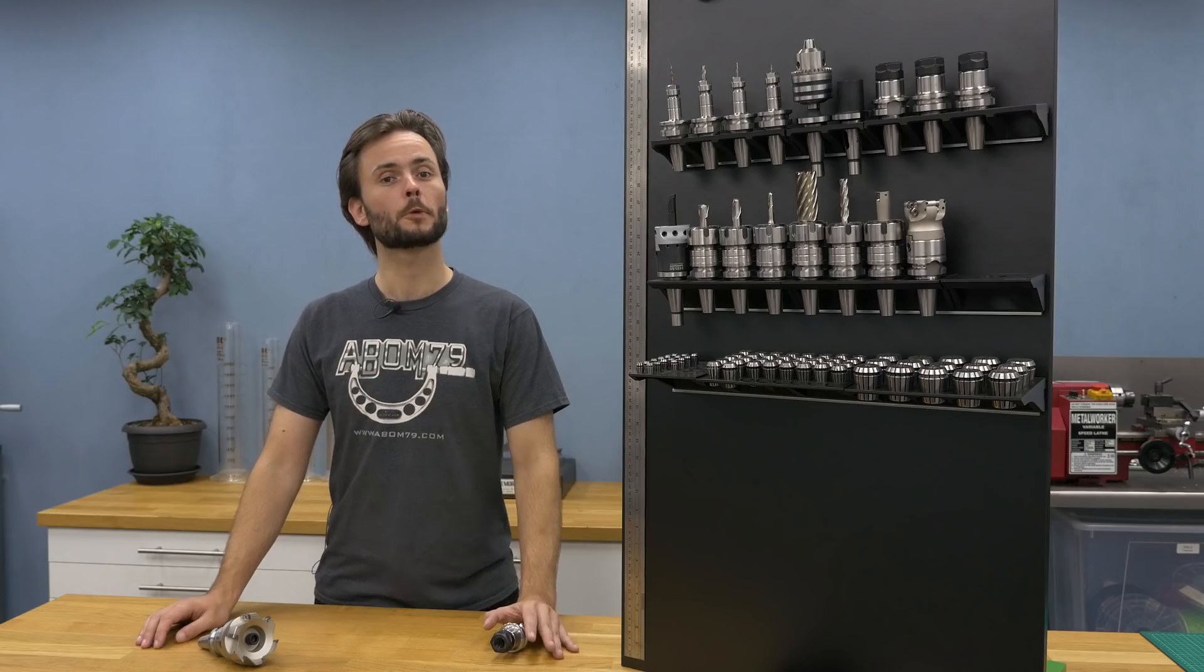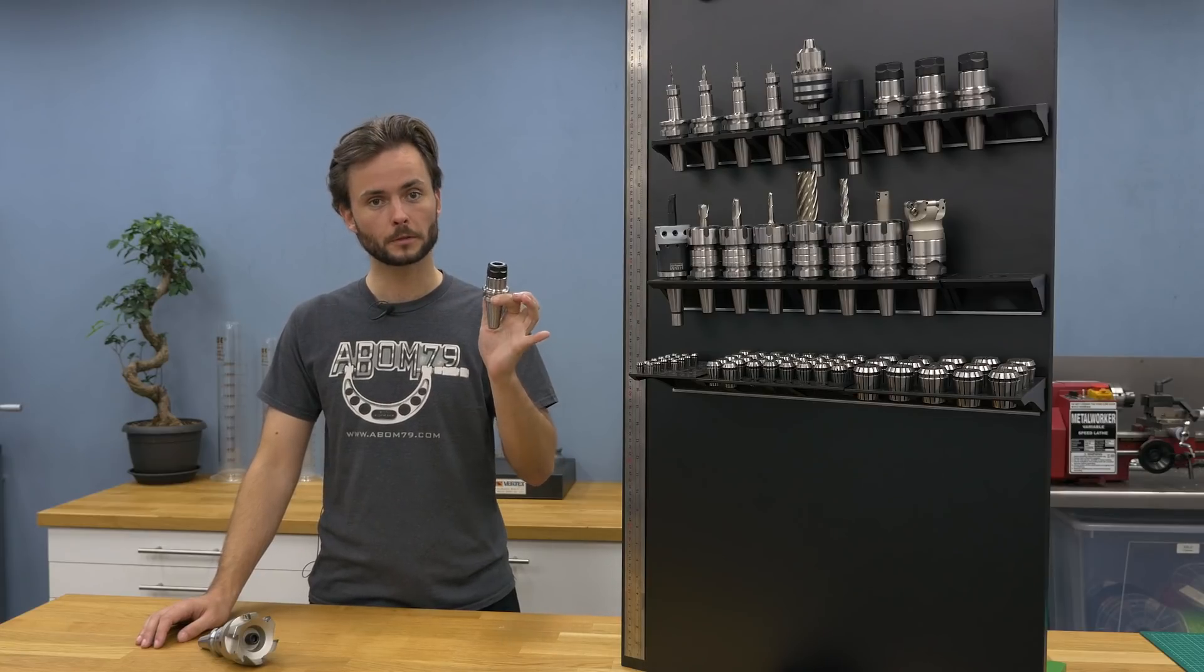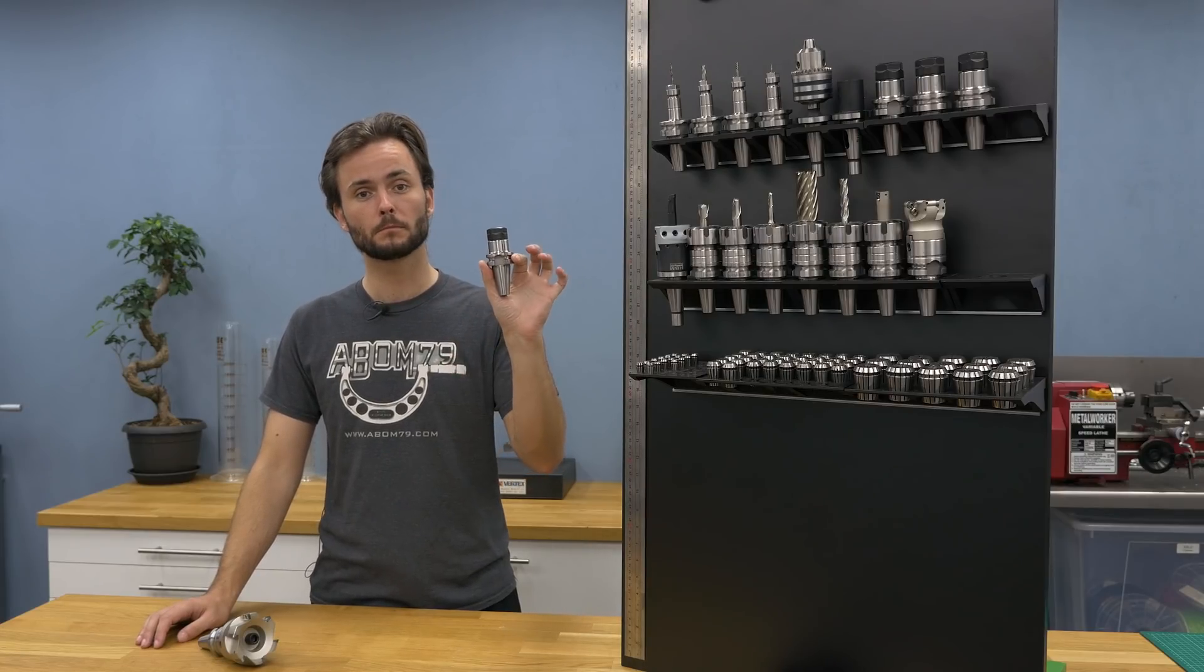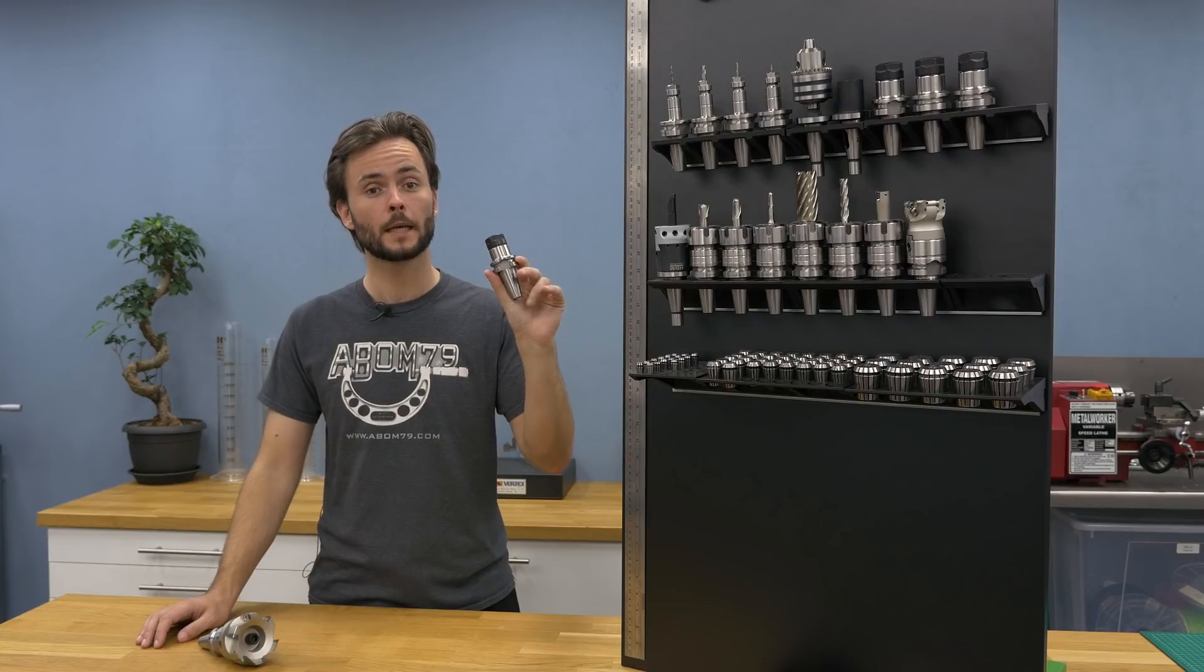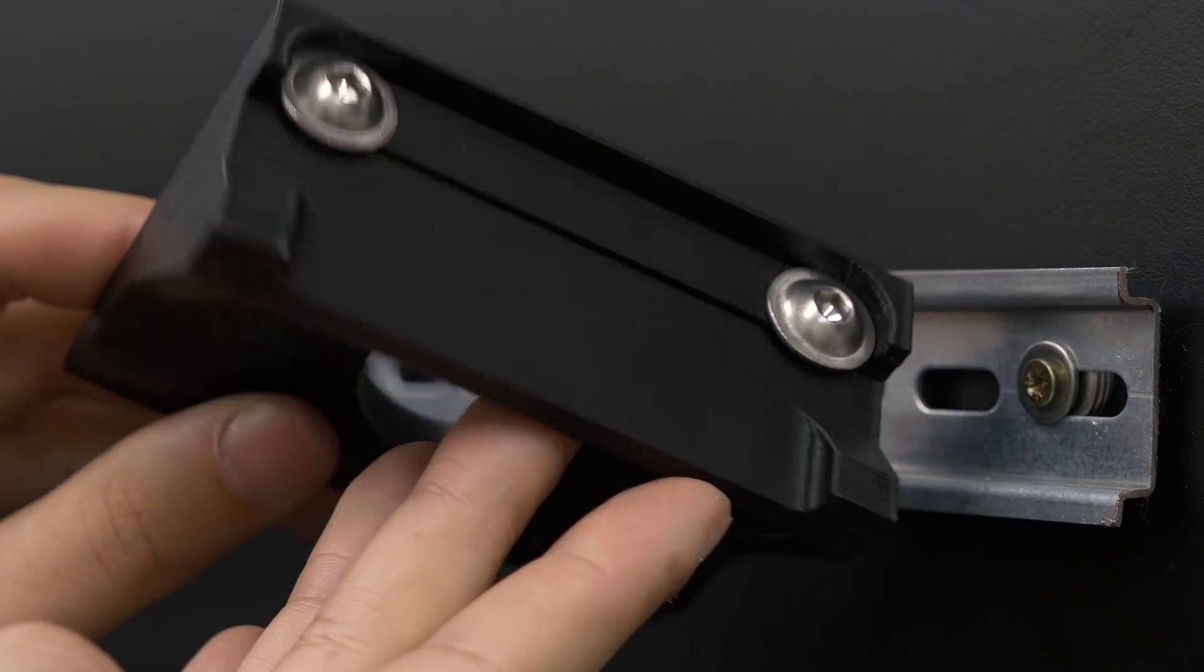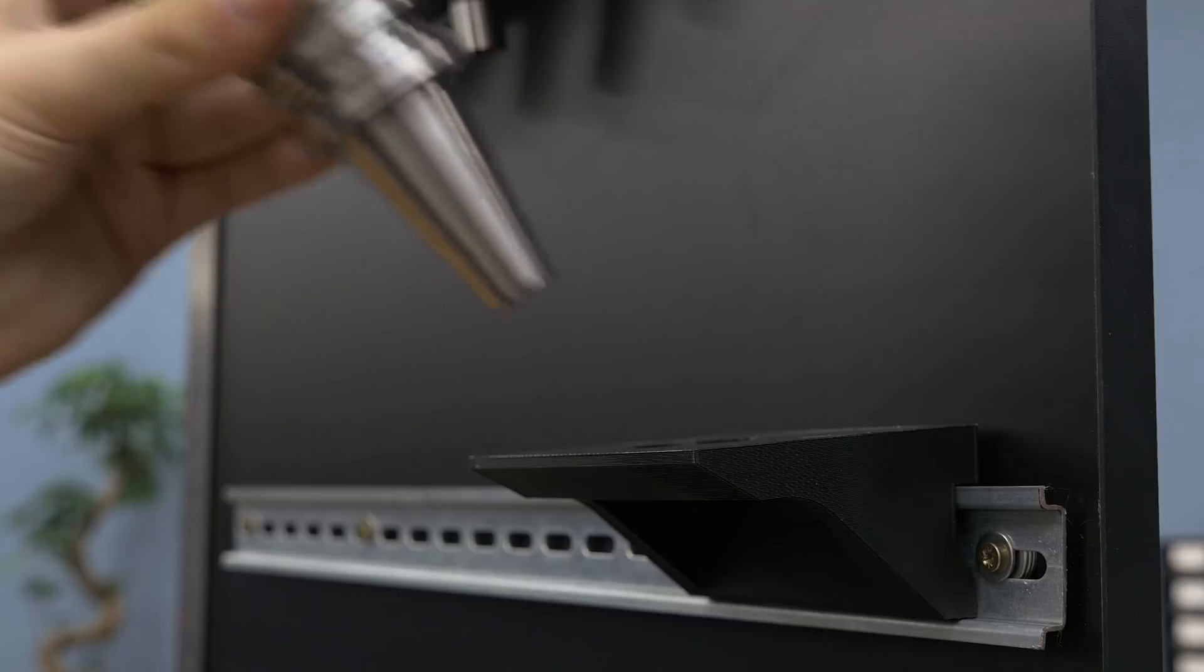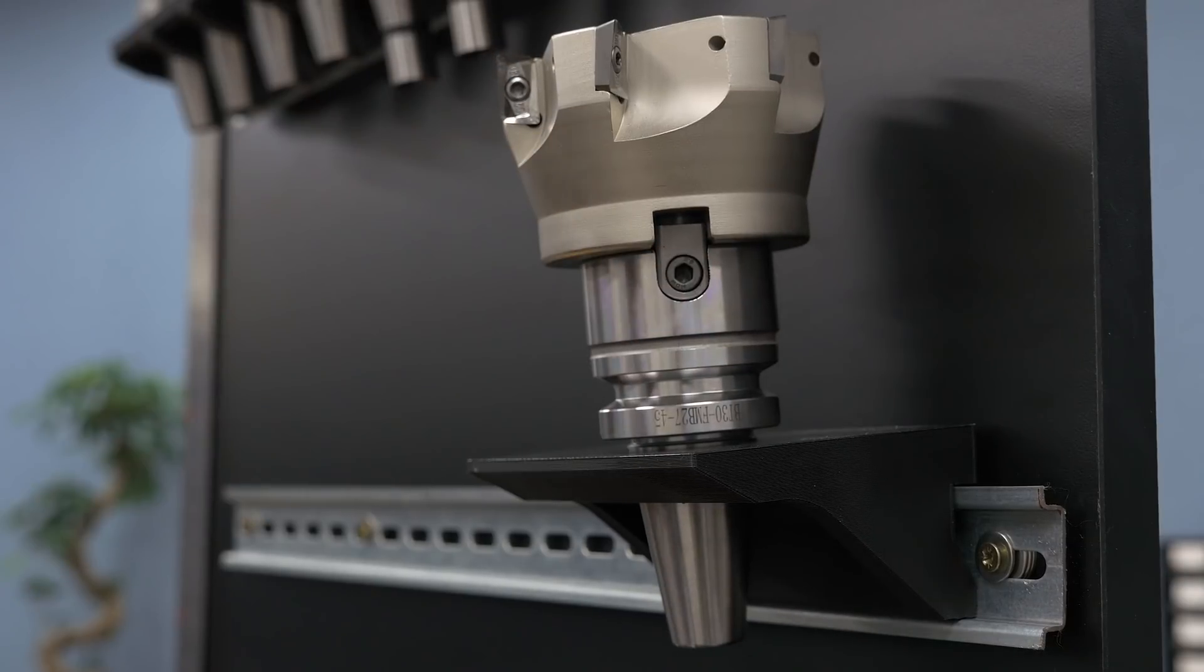So on to some building tips. First of all, if you have 30 taper tool holders that are bigger than this one for ER20 collets, you really need to pick the reinforced version, or the heavy duty version as it is called on the download page. It's stronger, and that way you can make sure that they don't fall off.